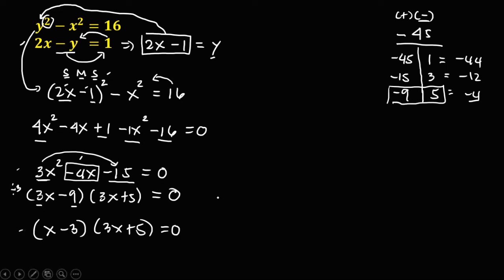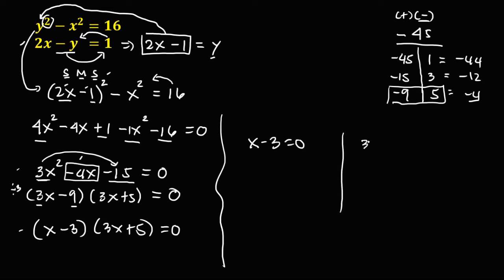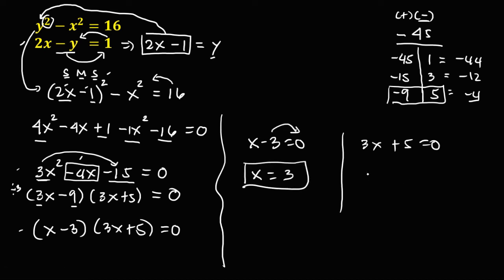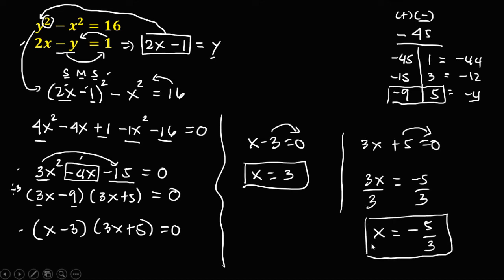These are the factors of the quadratic equation. To solve for x, we equate each factor to zero: x minus 3 equals 0 and 3x plus 5 equals 0. Solving: x equals positive 3, and for the other, 3x equals negative 5, so x equals negative 5 over 3.